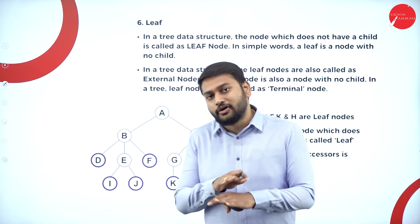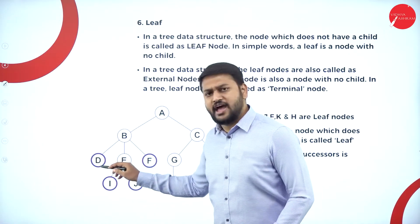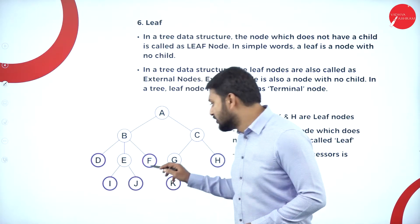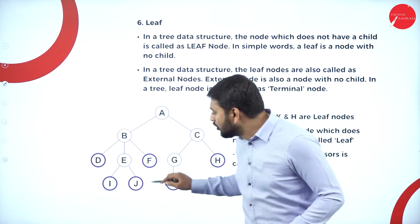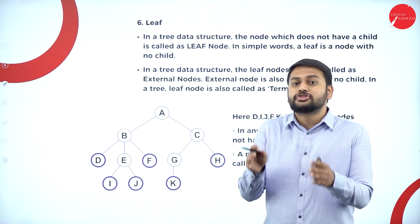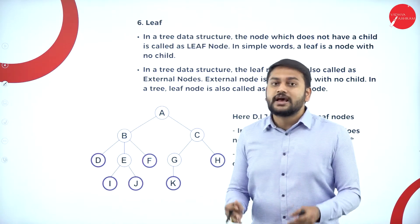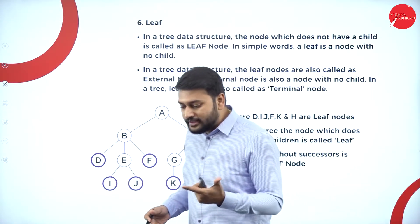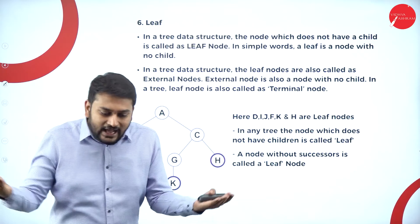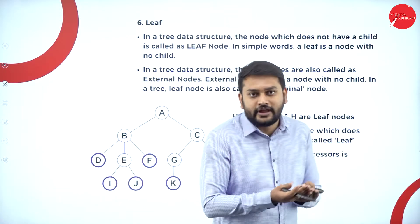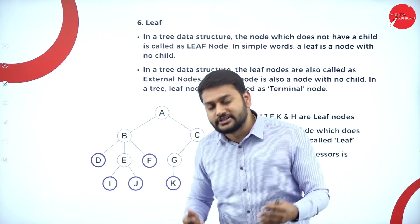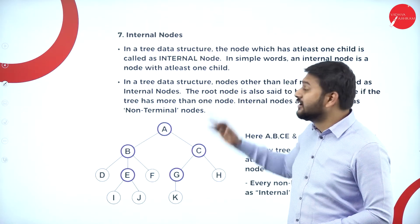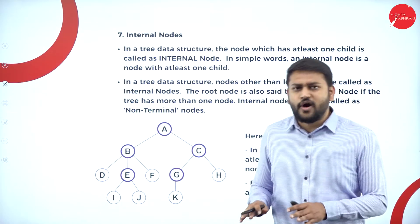Moving forward to leaf node. Whenever any node does not have any child, such a node I will call a leaf node. For any node that has no children, I treat it as a leaf node. One more thing — the nodes at the last level are also called leaf nodes.